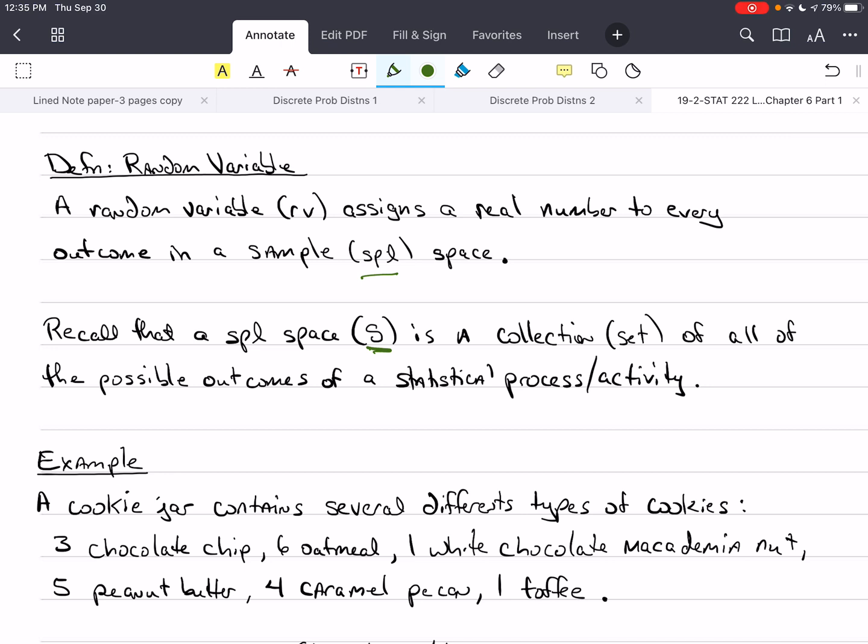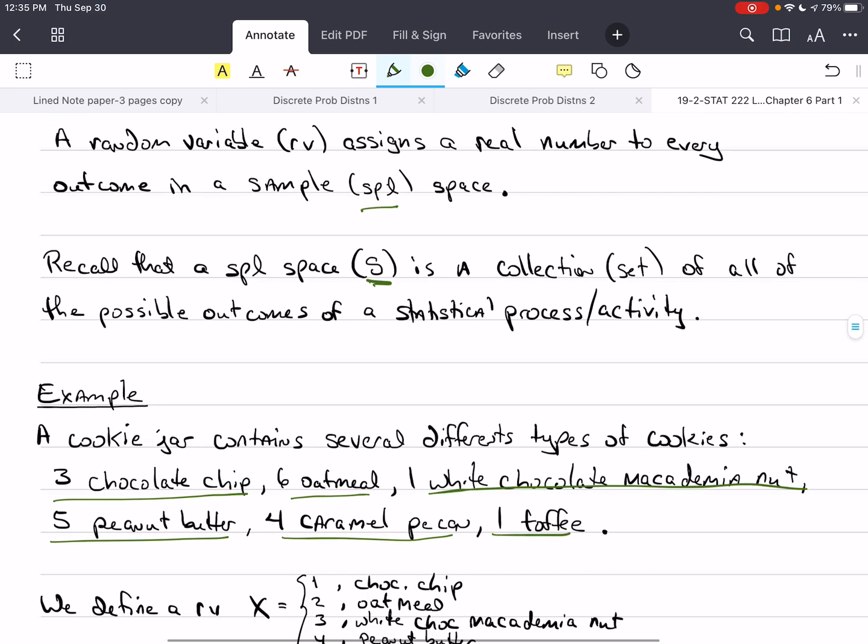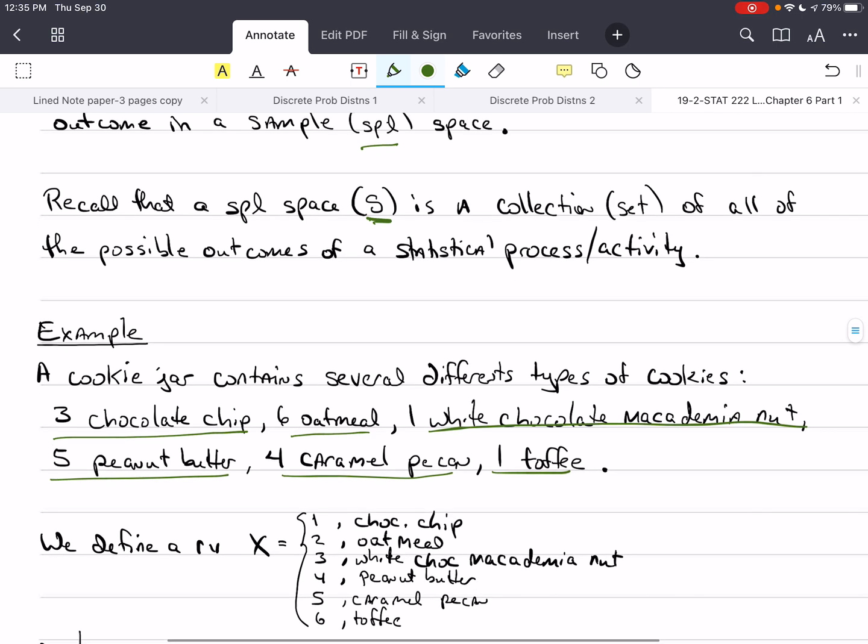Here's an example that's not a common example, so hopefully it will give you a good idea of what we're talking about. A cookie jar, my favorite kind of jar, contains several different types of cookies. There's a total of 20 cookies. There's not a normal or natural ordering to these types of cookies. You may have your preference, I have mine, they're probably different.